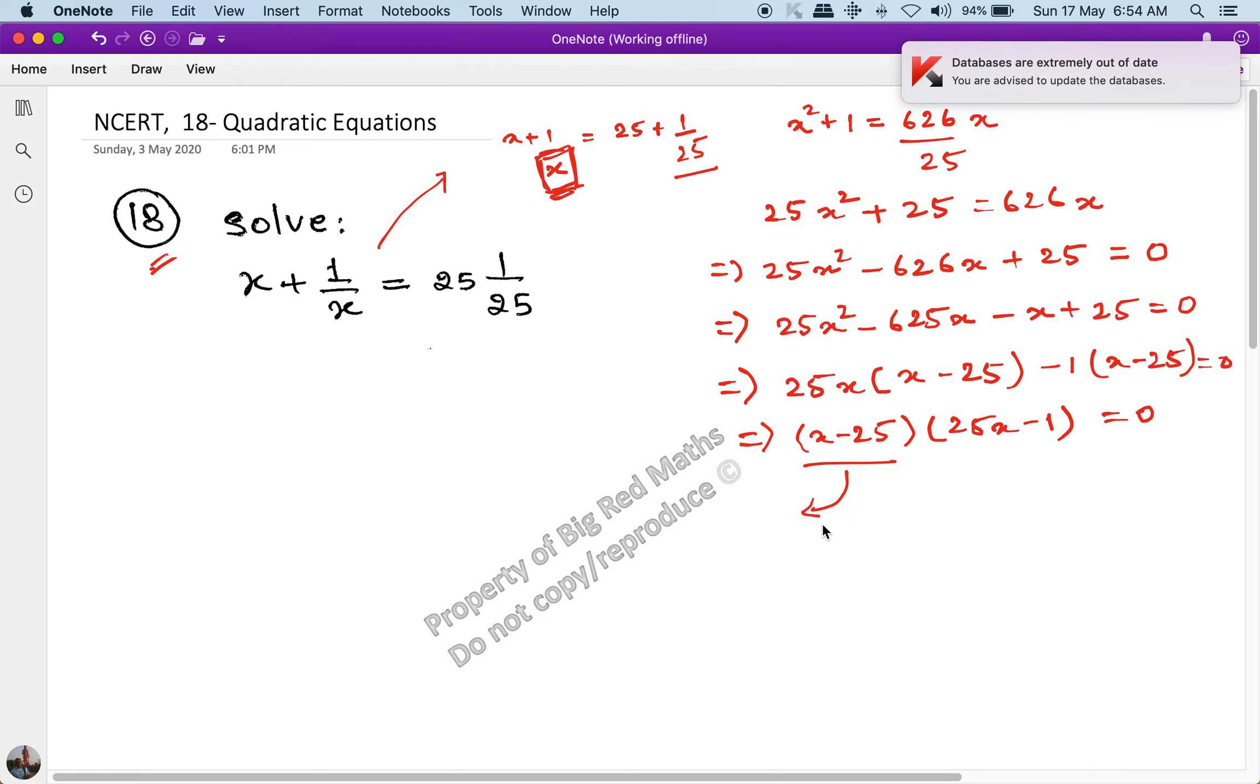Now if I equate this to 0, I get x equal to 25. This is the value we started with, that one root will definitely be 25. Now the other root remains, which is 25x minus 1 equals 0. If I equate this to 0, I get x equal to 1 by 25. This is the second root.